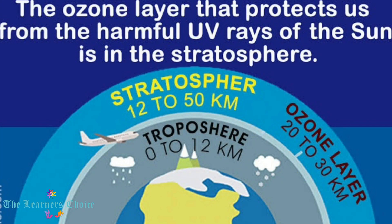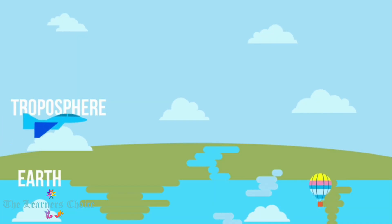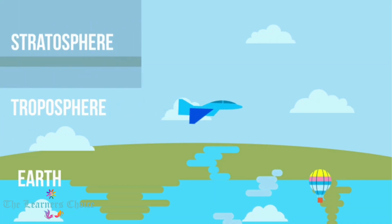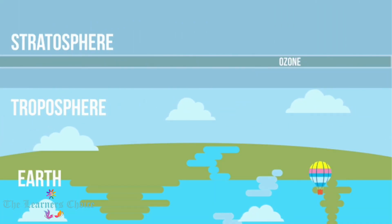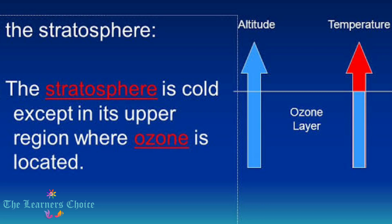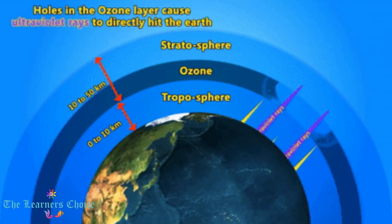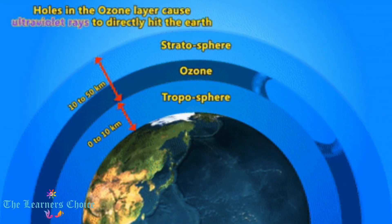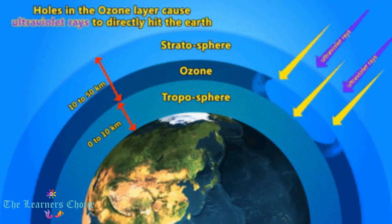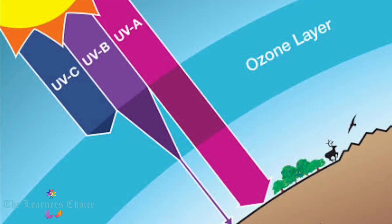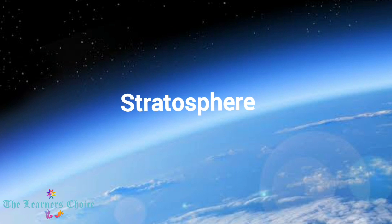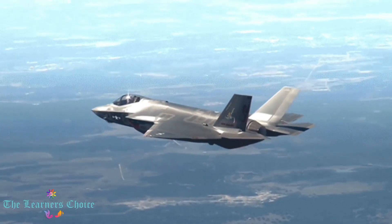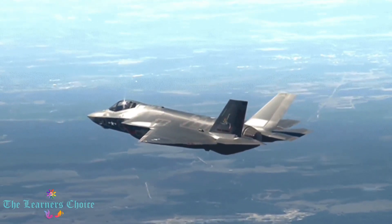Located between approximately 12 and 50 km above Earth's surface, the stratosphere is best known as home to Earth's ozone layer. In this layer, the temperature increases as we go higher. This is because ozone molecules absorb high-energy ultraviolet light from the sun and convert it into heat. It is a nearly cloud and weather-free layer, and also the highest part of the atmosphere that jet planes can reach.